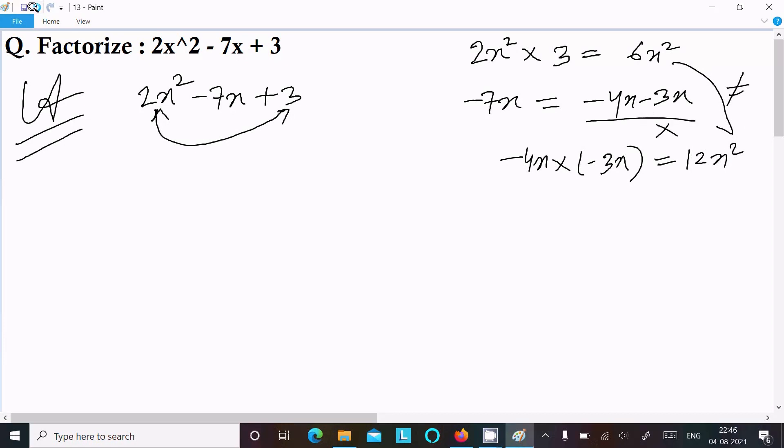After that, I am trying with -6x - x. So it equals -7x, and when I multiply -6x times -x, negative times negative is plus, and 6 times 1 is 6, x times x is x². So we get 6x². Both these two are same, it's equal, so we can use this.